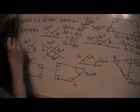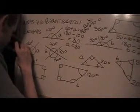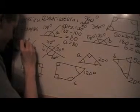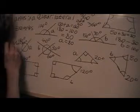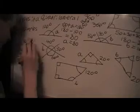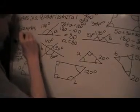Next problem — angles meeting at a point add up to 360. So I've got 180 here, and angle A plus 180 equals 360. We do 360 minus 180, and that comes out to be 180. So this angle A is 180 degrees.